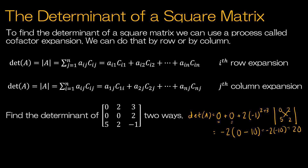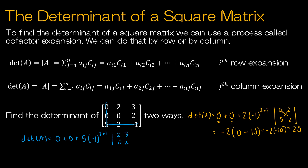That was using a row. Let's also use a column to verify we get the same value. I'm going to choose a column with as many zeros as possible. The determinant of A is again 0 plus 0 for the zero entries, and then 5 times negative 1 to the third row plus first column, with the matrix left over being 2, 3, 0, 2. That gives me 5 times negative 1 to the fourth, which is positive 5. Then 2 times 2 is 4, minus 0 times 3 is 0, so 5 times 4 is 20. I got 20 both ways.